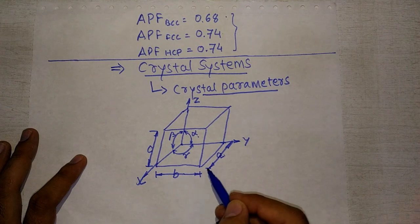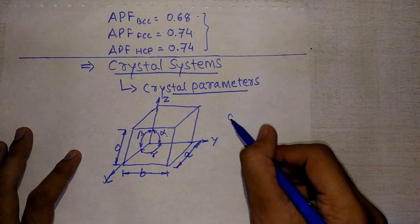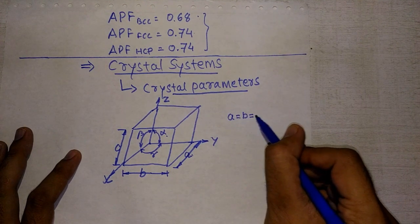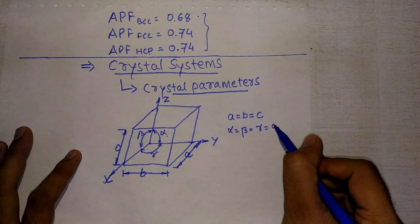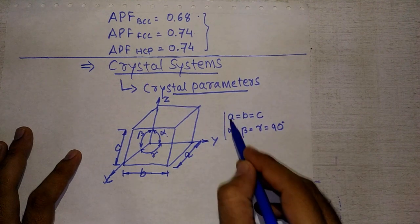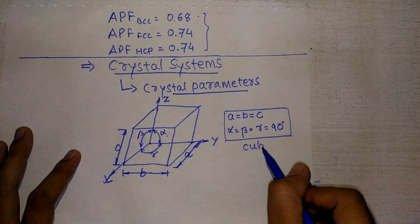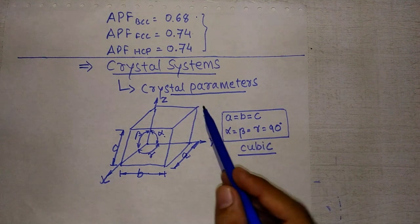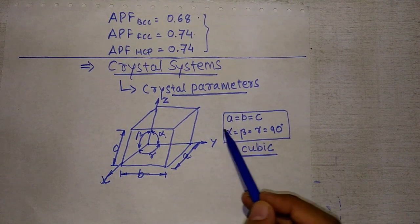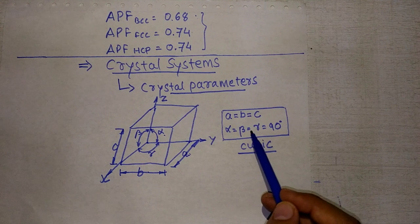By varying the values of a, b, c, α, β, γ we can get different crystal systems. For example, if a = b = c and α = β = γ = 90°, we can define the cubic system. Similarly, we can define different crystal systems by varying these values. In the next lecture we will define the different crystal systems with their specific crystal parameter values.